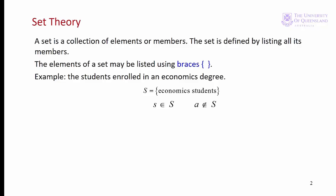A set is a collection of objects that are called the elements or the members of the set. Usually, we list the elements of a set within a pair of curly brackets called braces. For example, the students enrolled in economics. We use this epsilon symbol to indicate that an object — in this case little s — is a member of set uppercase S.